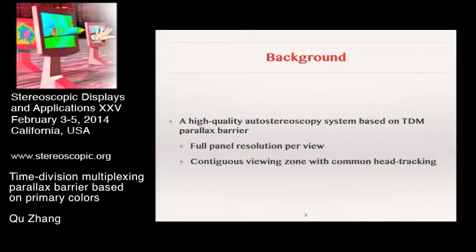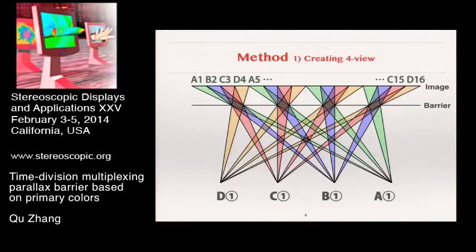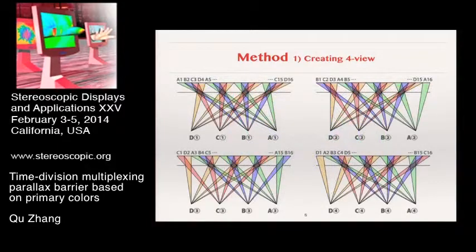We have been working on a high-quality autostereoscopy system based on TDM parallel barrier, which shows full-panel resolution per view and holds a contiguous viewing zone with common head tracking involved. The method is as follows: we set the aperture ratio to one-quarter, so the system will be a four-view system. Then, with quadruple TDM applied, full resolution per view can be achieved, where one frame shows one-quarter of the resolution and four frames show the complete four-view.